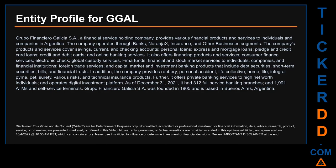Hello, my name is Carl. I searched the public web to find information about the company behind this ticker. Grupo Financiero Galicia SA is a financial service holding company that provides various financial products and services to individuals and companies in Argentina. The company operates through banks, Naranja X, insurance, and other business segments. Its products and services cover savings, current and checking accounts, personal loans, express and mortgage loans, pledge and credit card loans, credit and debit cards, and online banking services.